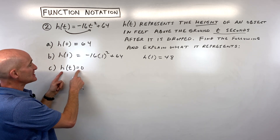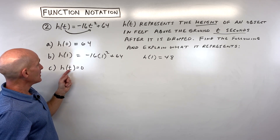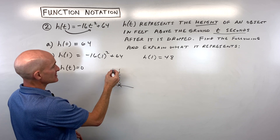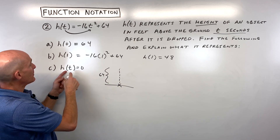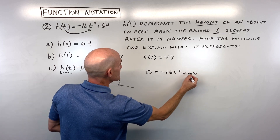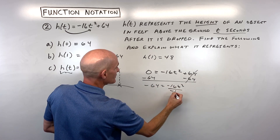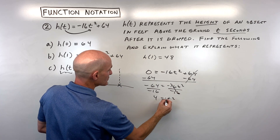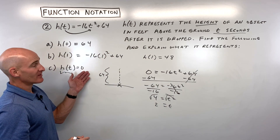For part C, H of T is equal to 0. They're telling us the output is zero — the height is zero, meaning that's when the object hits the ground. We replace H of T with 0 and solve for T. Subtracting 64 from both sides, then dividing both sides by negative 16 gives us 4 equals T squared. Taking the square root, T equals 2. After two seconds, the object hits the ground.